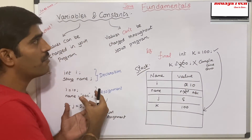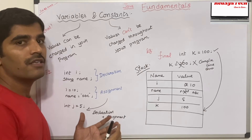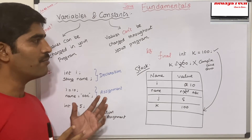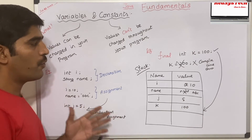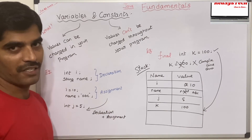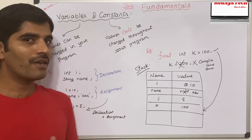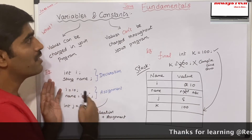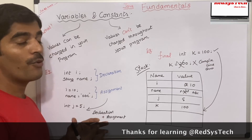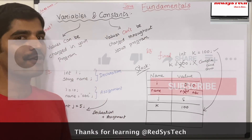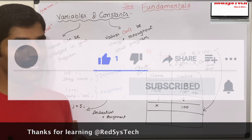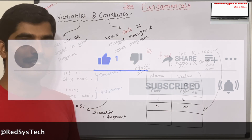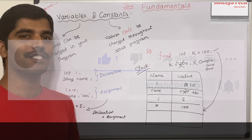This is how variables and constants are used in Java, and based on our requirement, we decide whether to make something a constant or keep it as a variable. If you have any questions, please post your comments. In our next video, we are going to explain the different types of variables and how they internally work. If you liked this video, please hit the like button, subscribe to the channel, and share with your friends. I will see you in the next video. Thanks for watching.